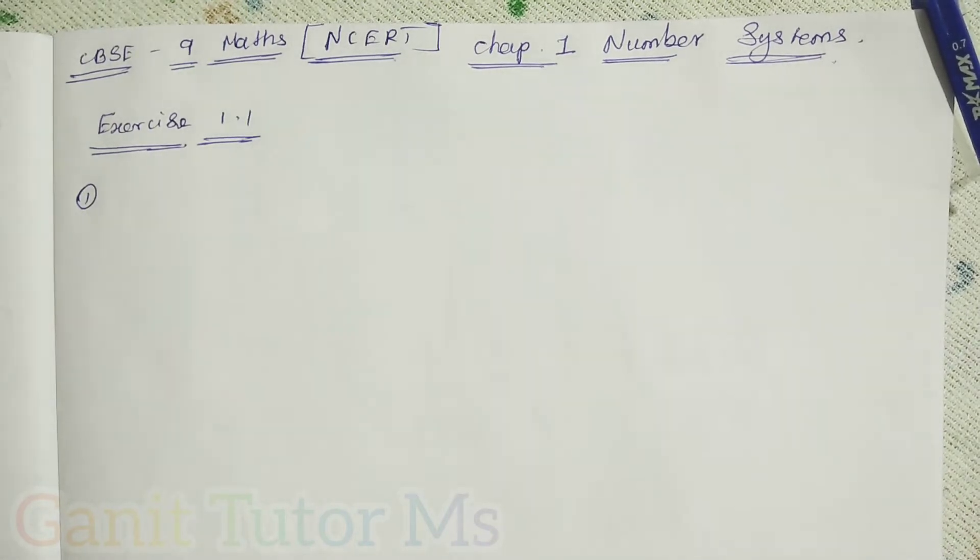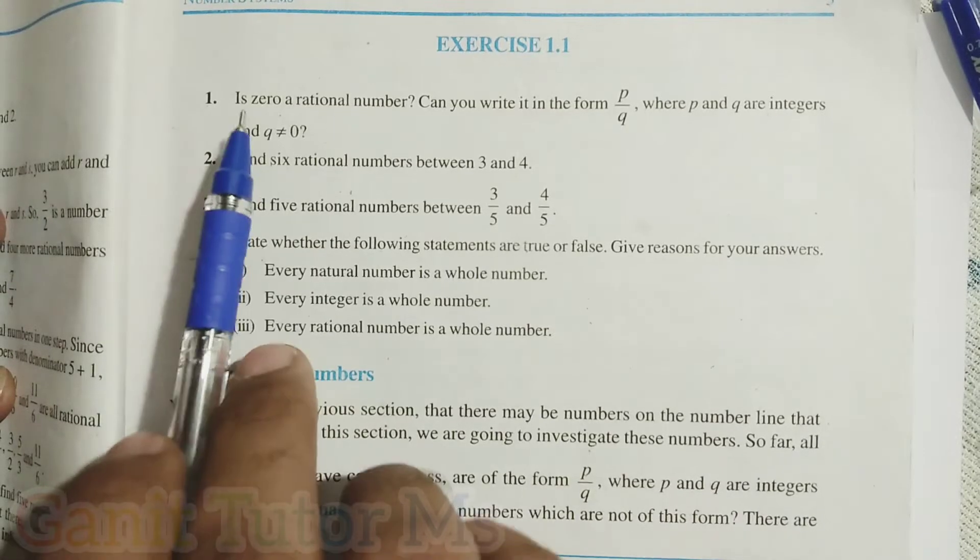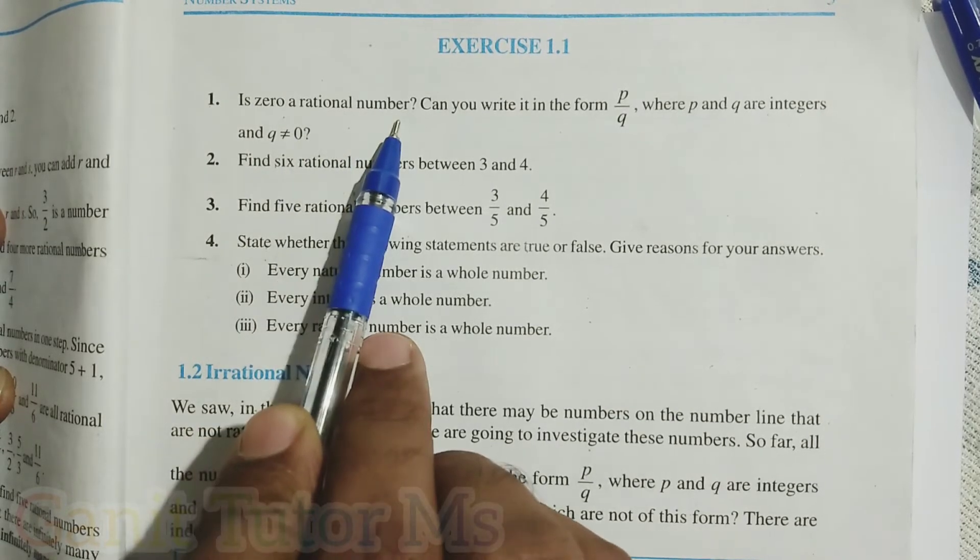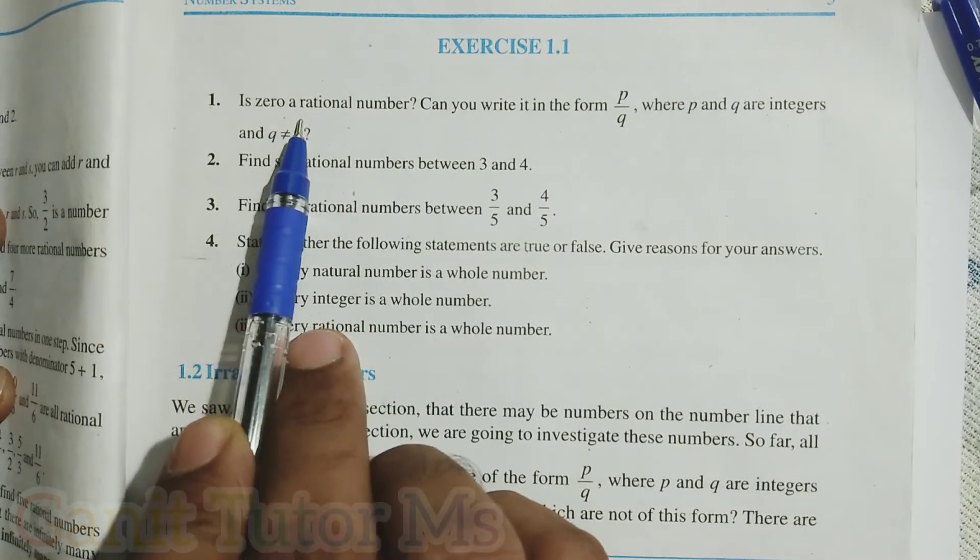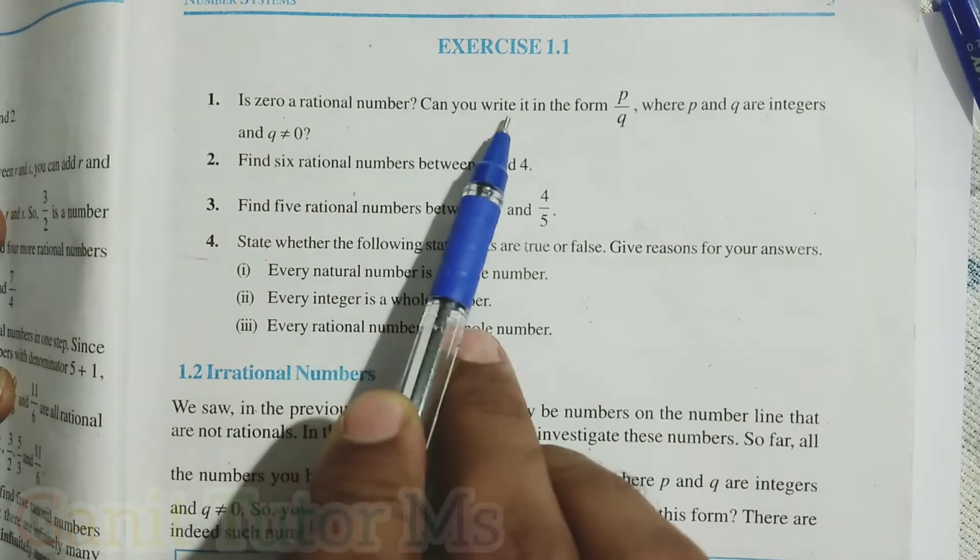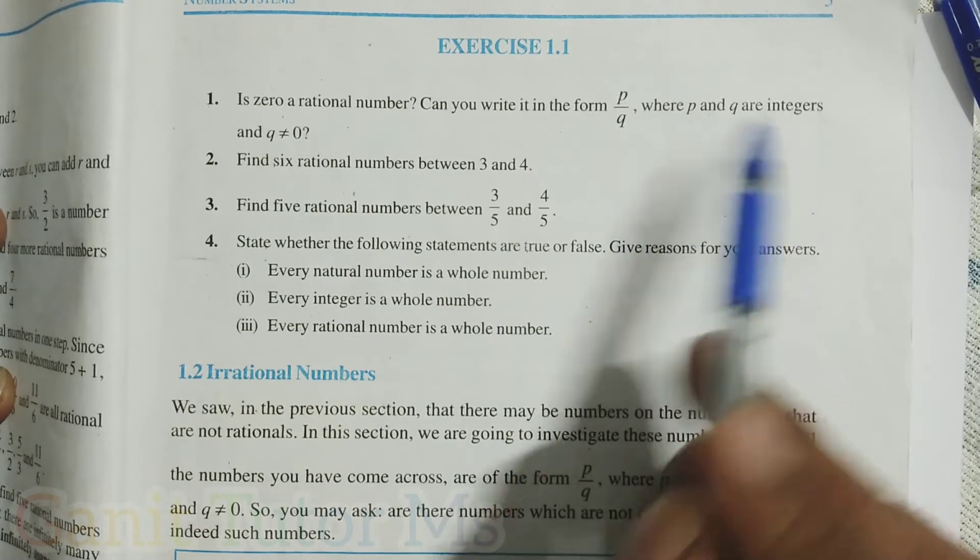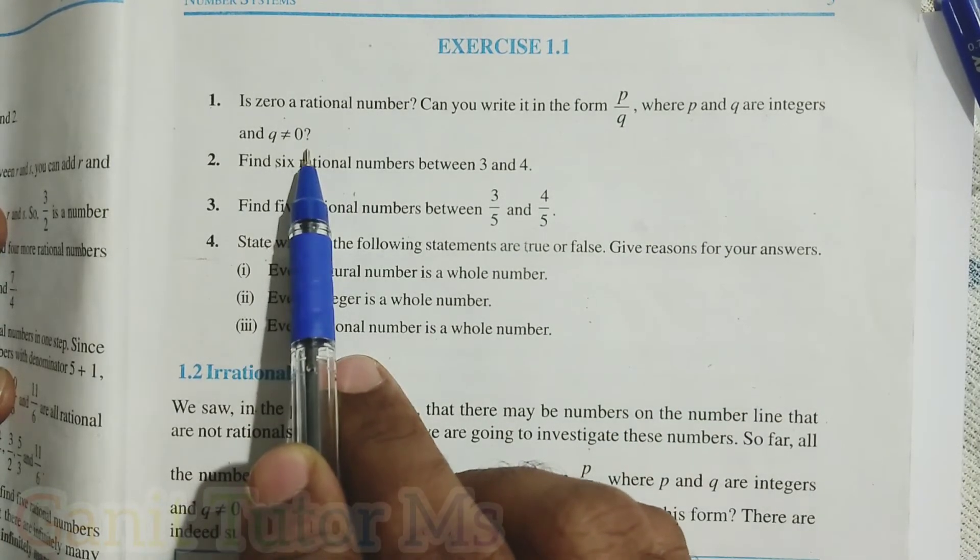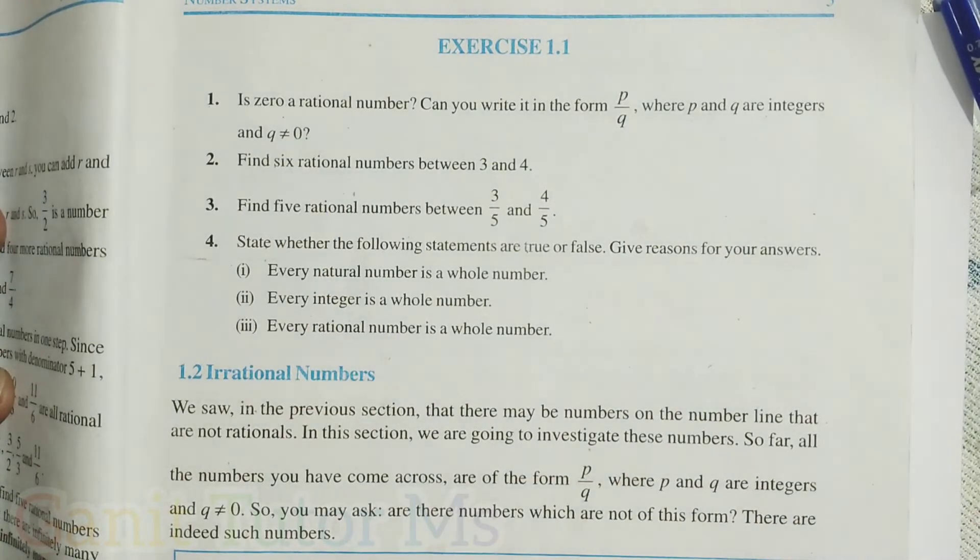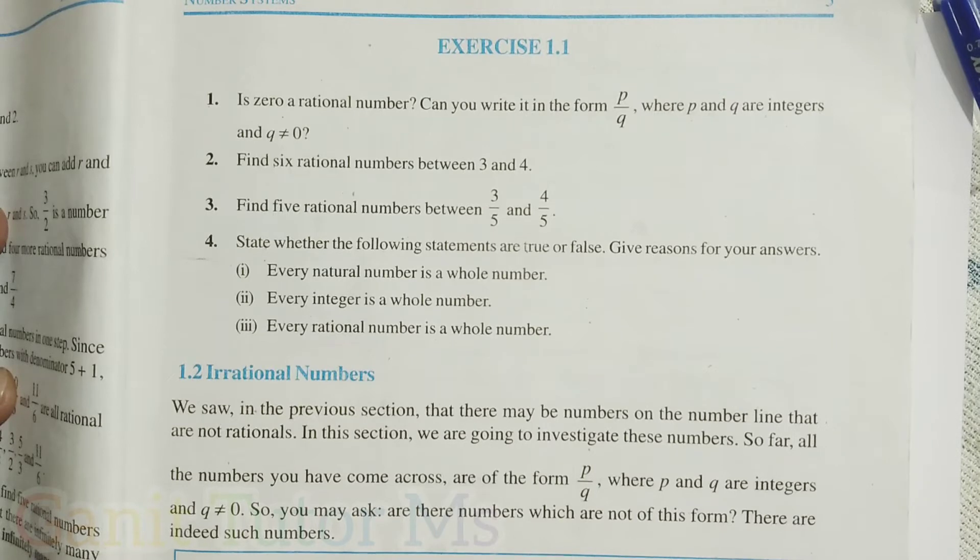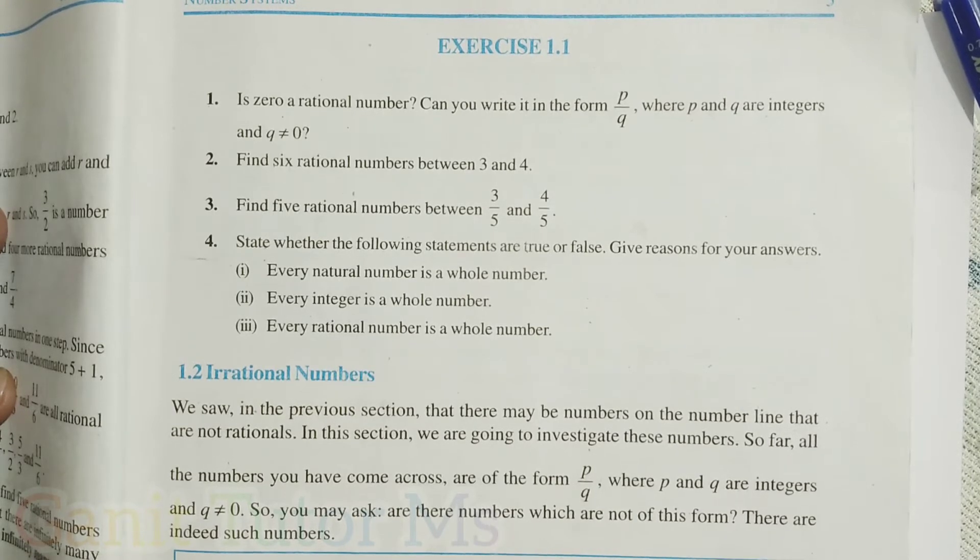Actually, what they've given in this problem is: Is 0 a rational number? Can you write it in the form of p by q, where p and q are integers and q not equal to 0? In this problem, they are asking, is 0 a rational number? Can it be written in the form of p by q? That is the question.